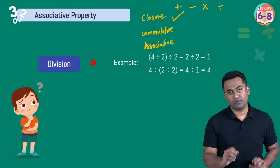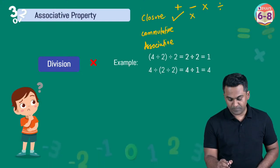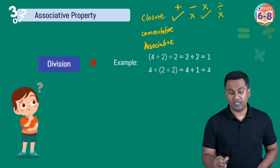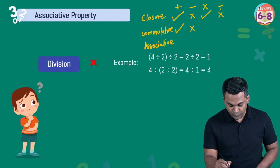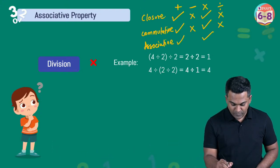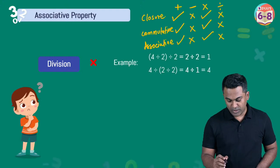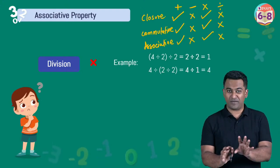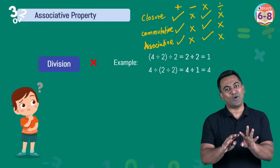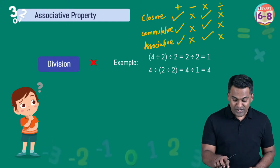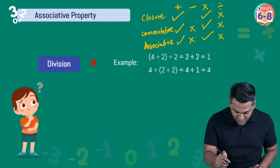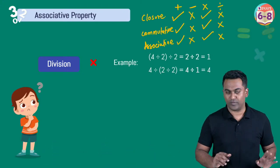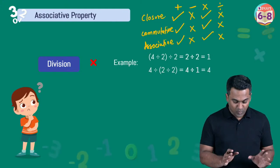Here's the full summary so far. Closure: addition ✓, subtraction ✗, multiplication ✓, division ✗. Commutative: addition ✓, subtraction ✗, multiplication ✓, division ✗. Associative: addition ✓, subtraction ✗, multiplication ✓, division ✗. Addition and multiplication follow all three properties; subtraction and division do not follow any of them.